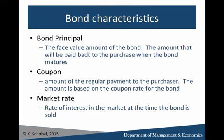Each bond has a number of characteristics. The first is the principal — the bond principal — which is the face value of the bond; it's the amount that's going to be paid back when the bond matures. The coupon is the amount of money you're going to get on a periodic basis — annually once a year, semi-annually twice a year, or quarterly four times a year — and that coupon is based on the coupon rate of the bond.